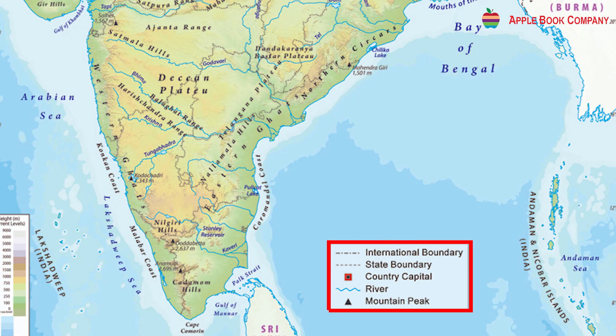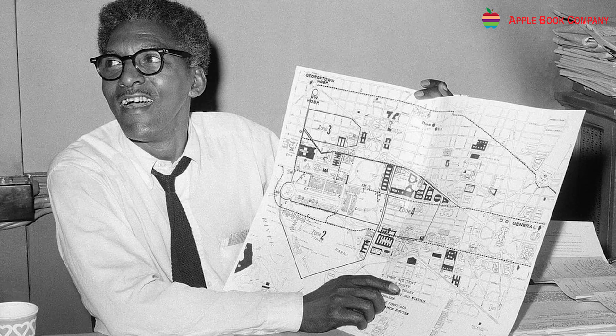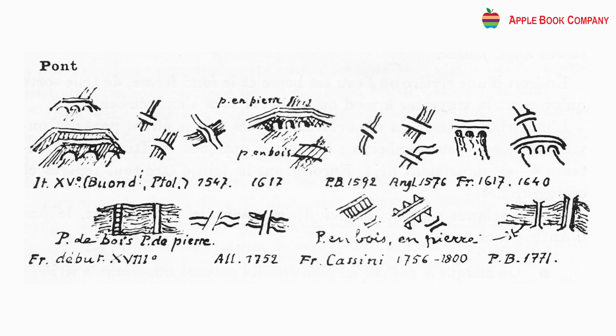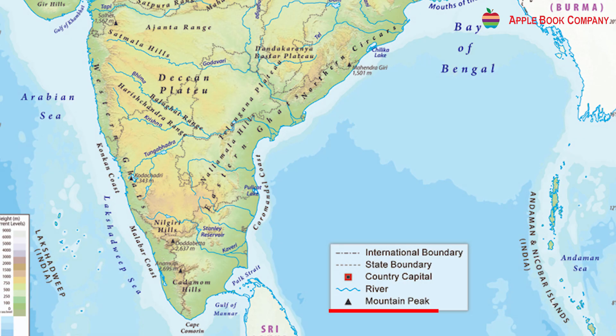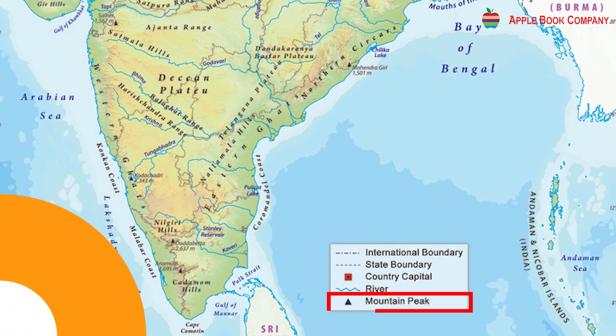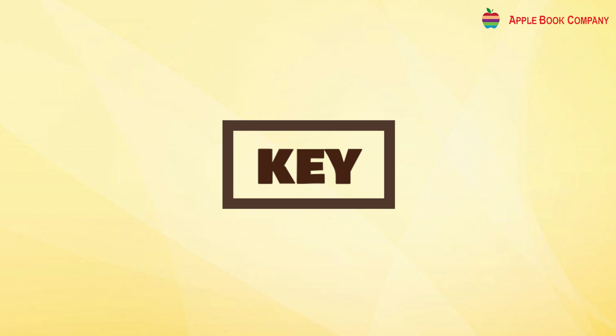Symbols on a map are small images that represent different features. The cartographer uses symbols on a map instead of writing in words. For example, a triangle shows a mountain.